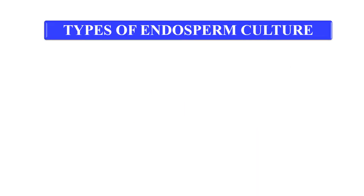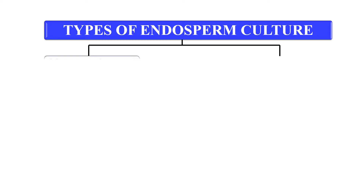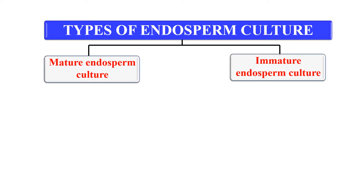Now, the types of endosperm culture. Endosperm culture can be of two types: these types include mature endosperm culture and immature endosperm culture.